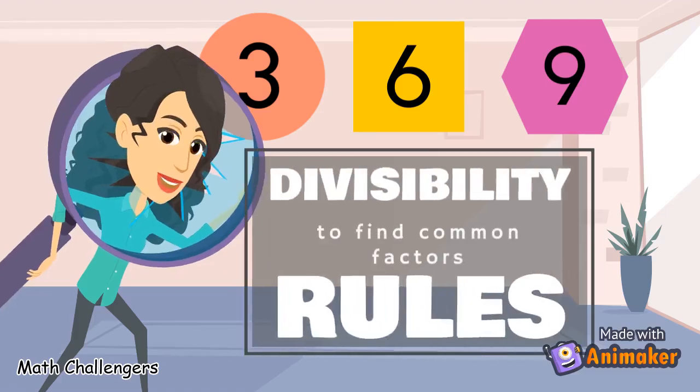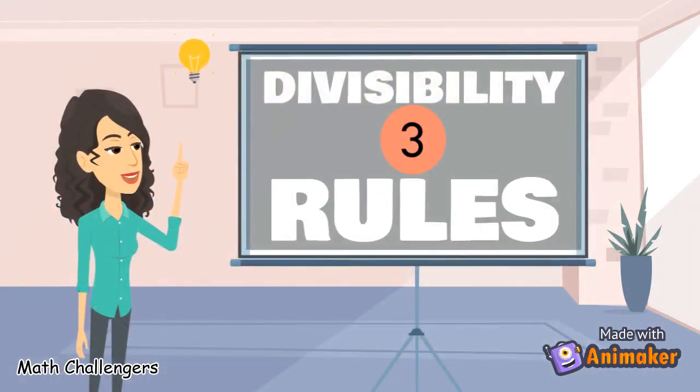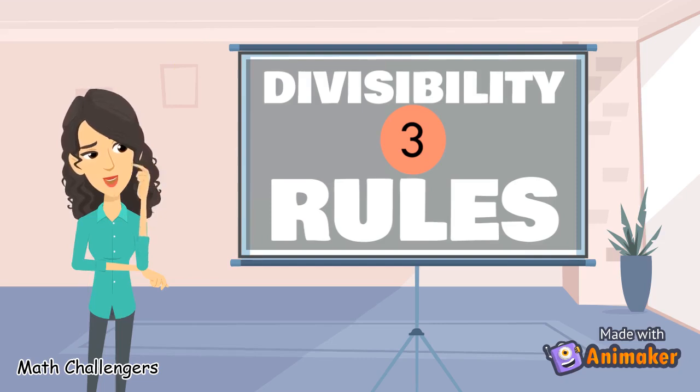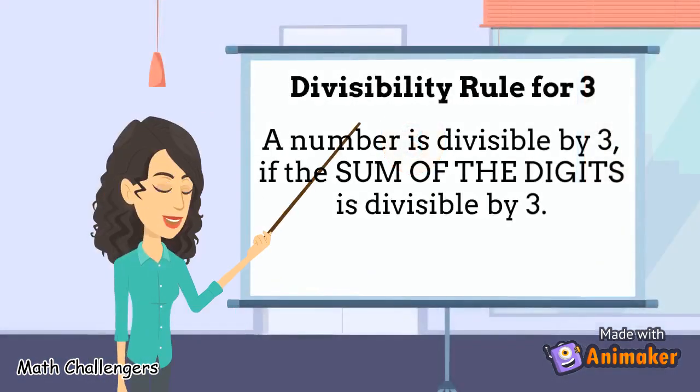Let us now have the divisibility rules for 3, 6, and 9. How would you know if a number can evenly be divided by 3 without doing the actual division? A number is divisible by 3 if the sum of the digits is divisible by 3.